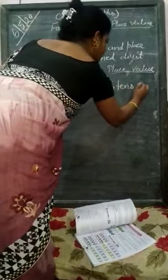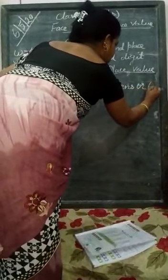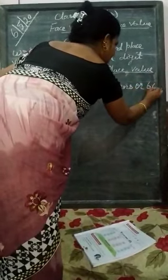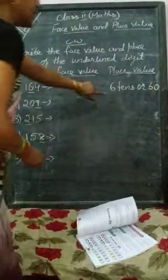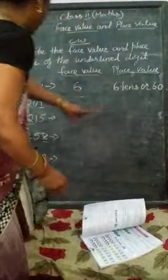So, we will write this as 60. 6 tens will be 60. The place value of 6 in 164 is 60.